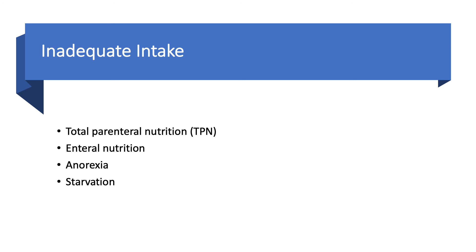Most of the time when you see hypokalemia, think about vomiting or someone inducing vomiting — like bulimia or anorexia nervosa — diarrhea, laxative abuse, diuretics, and magnesium deficiency. These are the four most common causes in clinical practice. If an attending asks you about the causes, lead with those — don't immediately say Bartter syndrome, Gitelman syndrome, or Liddle syndrome. You may see one of those rare genetic cases in your whole career, but you'll see hypokalemia from diarrhea, vomiting, laxatives, and hypomagnesemia every day. Know everything, but prioritize. I'll stop here and see you in the next lecture.